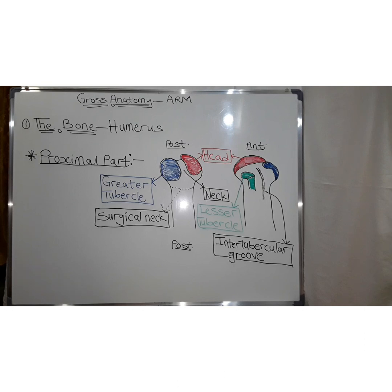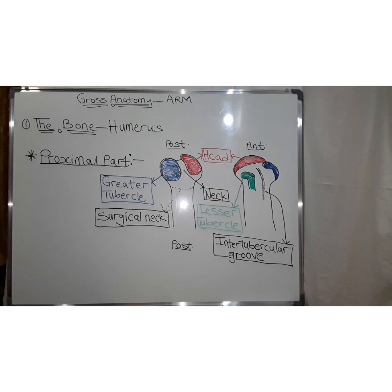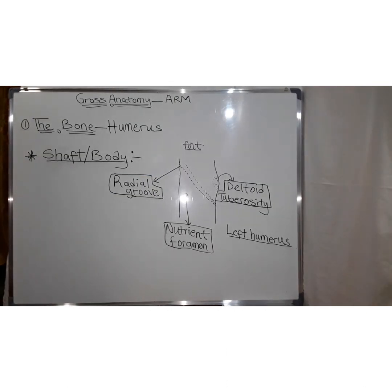The areas in the proximal region include the head, which is spherical and attaches to the glenoid cavity at the shoulder joint. The anatomical neck is a groove surrounding the head of the humerus, separating it from the greater and lesser tubercles. The surgical neck, distal to the head and tubercles, is a common site of fracture. At the lateral margin is the greater tubercle, and projecting anteriorly is the lesser tubercle. Separating these tubercles is the intertubercular groove.